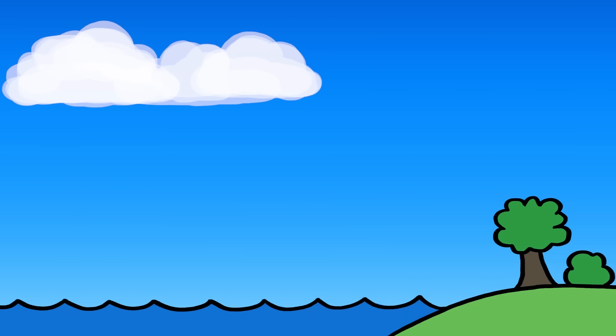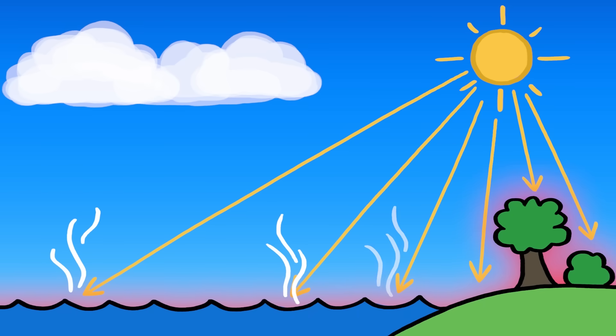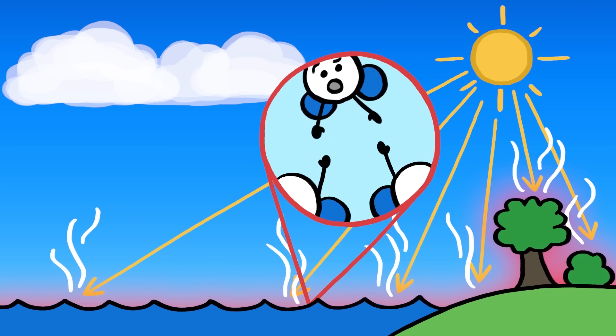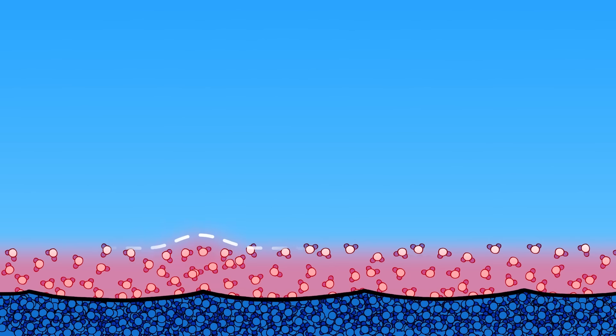Cumulus clouds, for example, get their start when solar energy evaporates water from oceans, plants, and soil by breaking the bonds that hold water molecules together. As the patch of air above collects moisture and heat, cooler, heavier air sinks around it, pinching it off and pushing it aloft like an invisible hot air balloon.